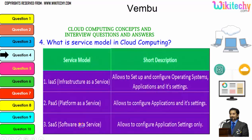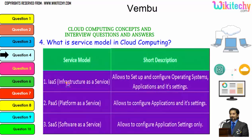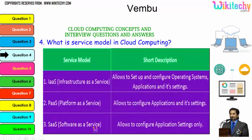The three major service models are: first, infrastructure as a service — you are given a server and allowed to set up and configure the operating system, applications, and settings. Second, platform as a service — you are allocated a server with a specified operating system and can put any applications and settings. Third, software as a service — you are given software and can do whatever application settings you want.